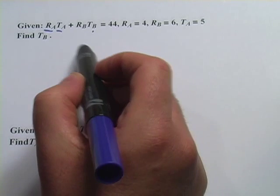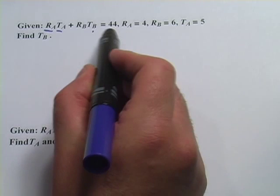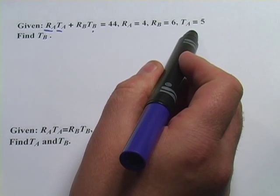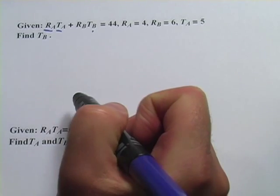And then they give us this information. Those two together equal 44, r sub a is 4, r sub b is 6, t sub a is 5, and they want us to find t sub b.